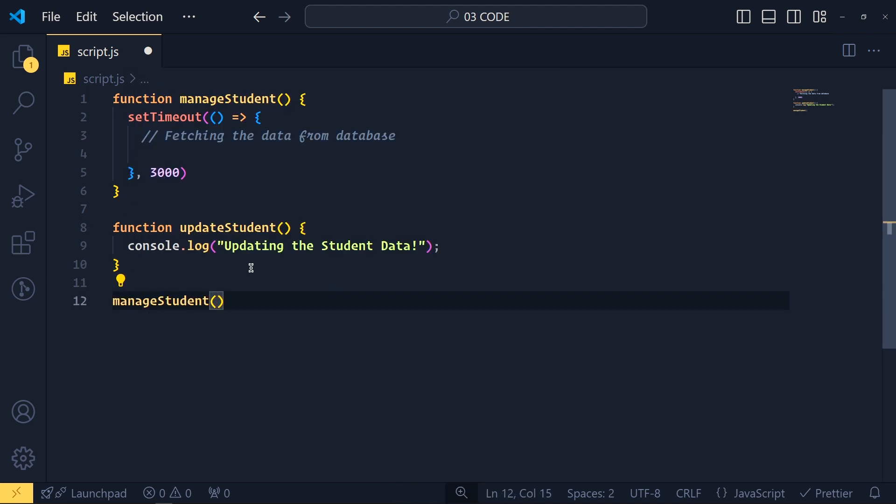And as the parameter, we pass this updateStudent function. Now same as other function arguments, we get this updateStudent function as the first parameter in this function. So we can call it anything like updateFunction or anything. But most developers like to call this function callback because we are going to run this function after a specific task. And simply, inside the setTimeout, we call this callback function. Simple as that.